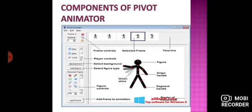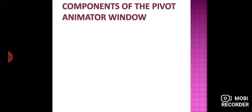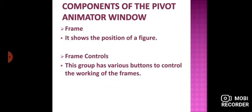Next, we will learn about these components in detail. Frame — what is frame? It shows the position of a figure. Frame हमें figure की position show करता है. Frame controls: this group has various buttons to control the working of the frames. Frame controls में बहुत सारे buttons हैं जो frames को control करते हैं — उनकी working को, कि वो कैसे काम करेंगे.